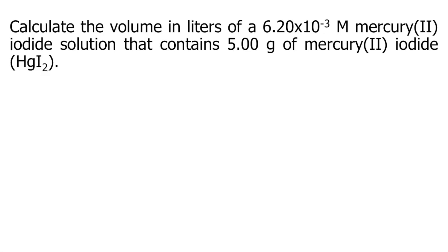Calculate the volume in liters of a 6.20×10⁻³ molar mercury(II) iodide solution that contains 5 grams of mercury(II) iodide. The chemical formula of mercury(II) iodide is HgI₂.